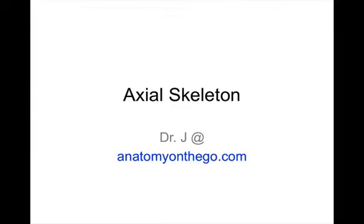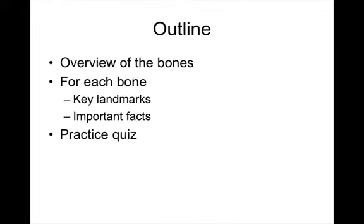This is the very final video in this mini course, Introduction to the Human Skeleton. I'll talk about the axial skeleton — the last segment of the skeleton we haven't seen yet. We've already covered the upper limb and the lower limb, and now we're talking about the skeletal structures in the middle of the body. I'll provide an overview of the bones, highlight key landmarks, and then at the end I'll provide a little practice quiz to help you embed this information.